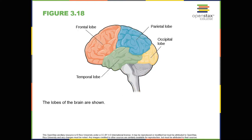Lobes of the brain. The four lobes of the brain are the frontal, parietal, temporal, and occipital lobes, which are shown in figure 3.18. The frontal lobe is located in the forward part of the brain, behind your forehead, extending back to a fissure known as the central sulcus. The frontal lobe is involved in reasoning, motor control, emotion, and language. It contains the motor cortex, which is involved in planning and coordinating movement; the prefrontal cortex, which is responsible for higher-level cognitive functioning; and Broca's area, which is essential for language production.